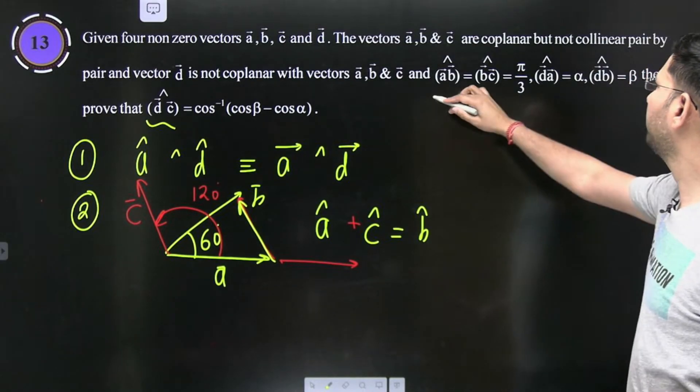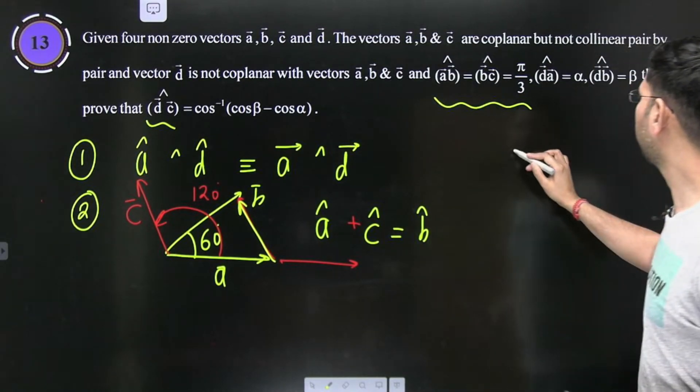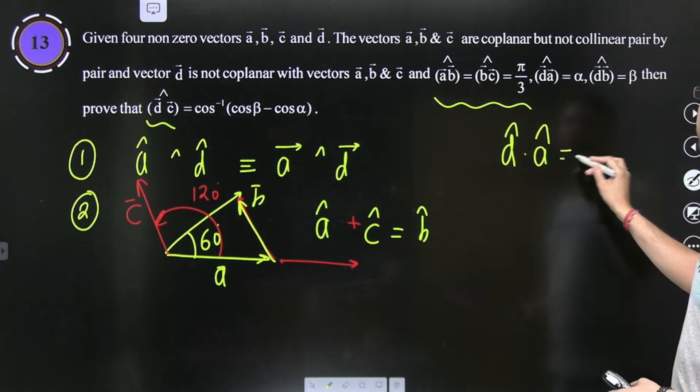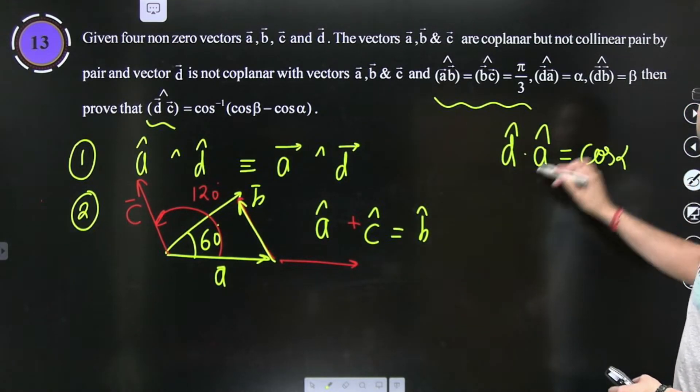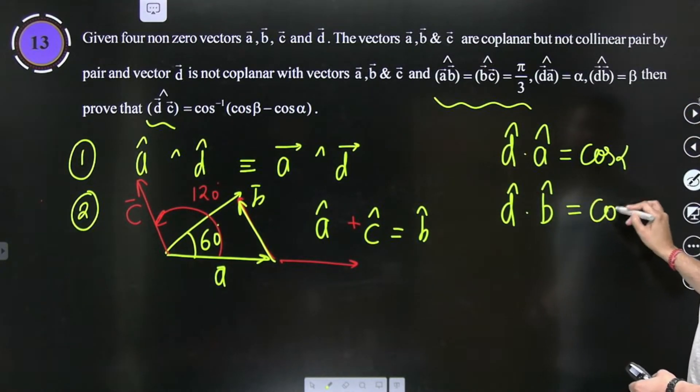Acha, ab chalo us mein yeh baat apan hai use kar liye. D or a ke beech mein, to bachon is relation ko mein likh deta hu. D cap dot a cap is equal to cos alpha. Bachon is relation ko likh deta hu. D cap dot b cap is equal to cos beta. Samajh mein aa raha hai.